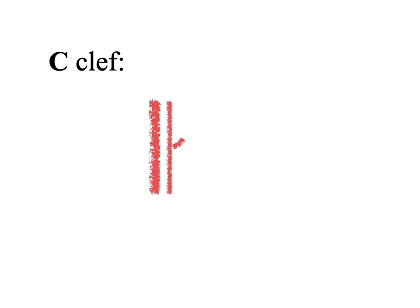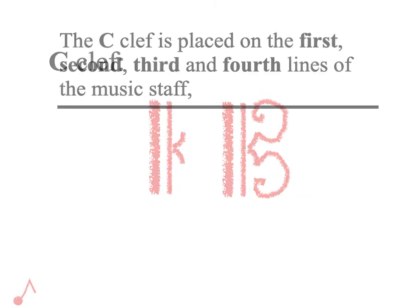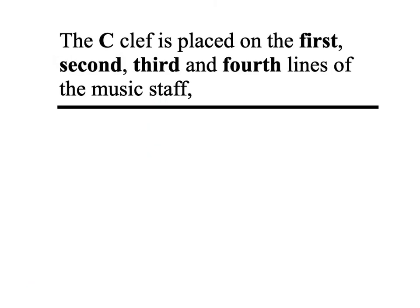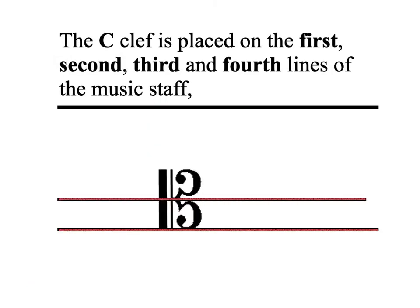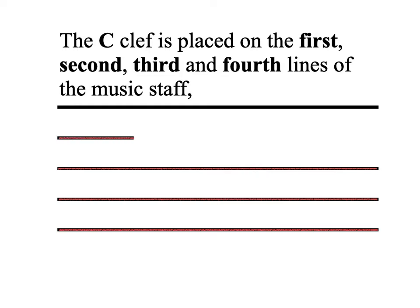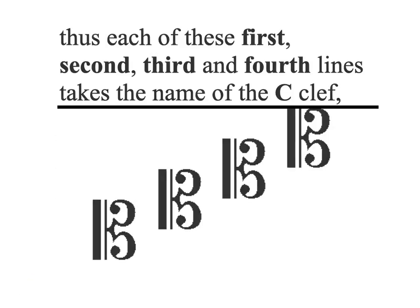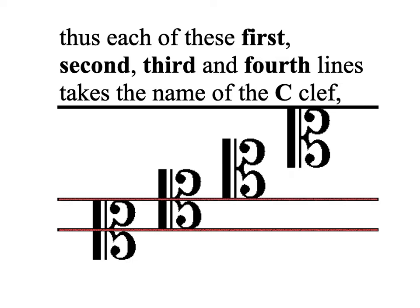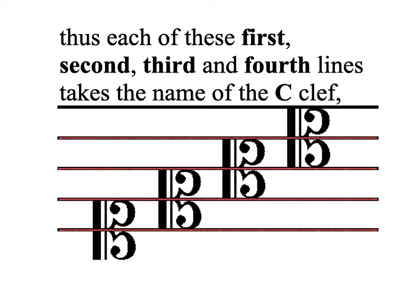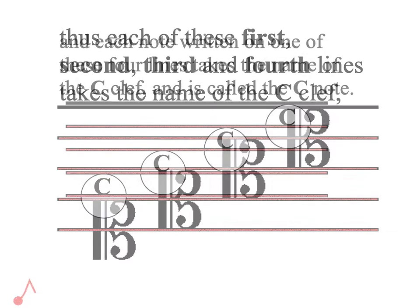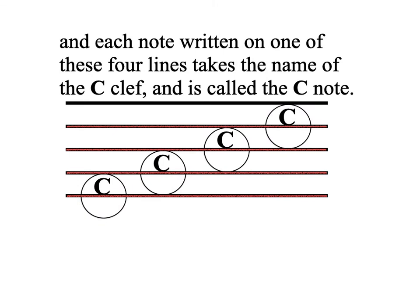C-clef. The C-clef is placed on the first, second, third, and fourth lines of the music staff. Thus, each of these first, second, third, and fourth lines takes the name of the C-clef, and each note written on one of these four lines takes the name of the C-clef and is called the C-note.